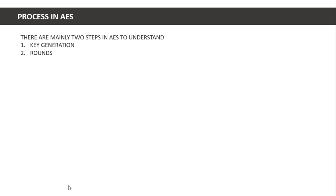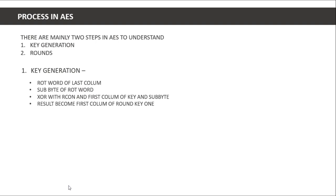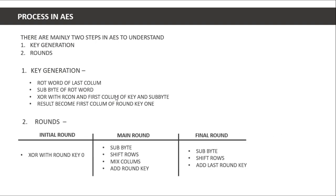There are two main steps in AES to understand: key generation and the rounds. I'll cover key generation first because I find it interesting. The process involves taking the last column of the key, applying rot word, then sub byte, then XOR with the r-con value and the first column of the key. The sub byte result becomes the first column of the new round key.